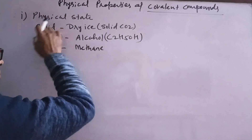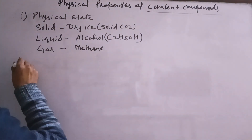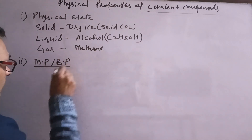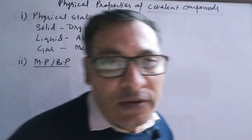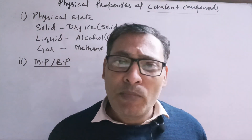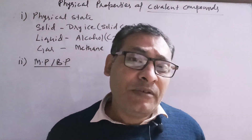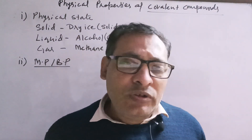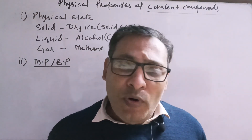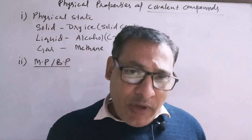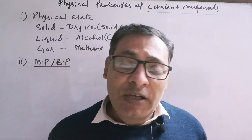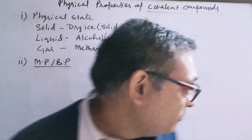The next property is melting point and boiling point. Melting points and boiling points of covalent compounds are generally very low, since the force of attraction between the molecules of covalent compounds is very low. Covalent bonds are a weak type of bond in comparison to ionic bonds, so melting points and boiling points of covalent compounds are very very low.